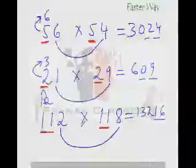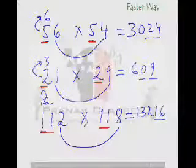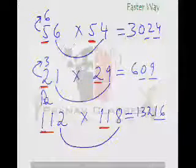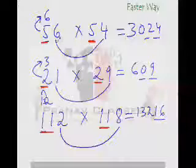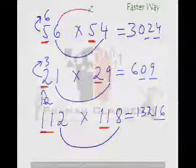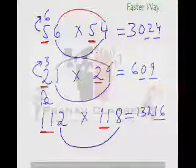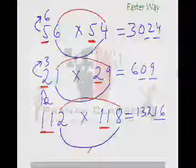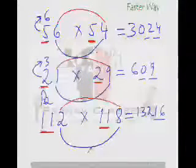The first condition is that the numbers have to be other than 50, 60, 70, 120, 130, and so on. The second condition is that the units digit should always add up to 10, like 6 plus 4 is 10, 1 plus 9 is 10, 2 plus 8 is 10.